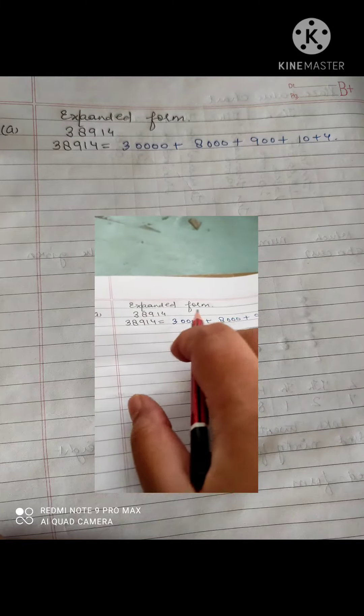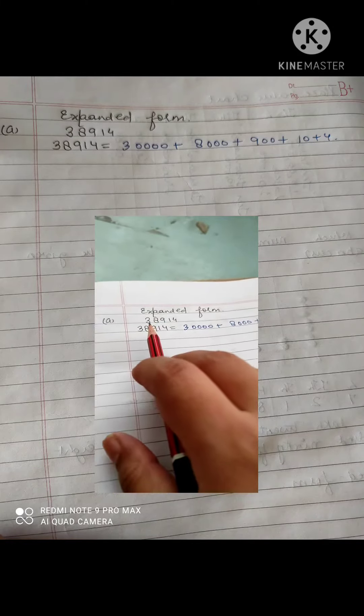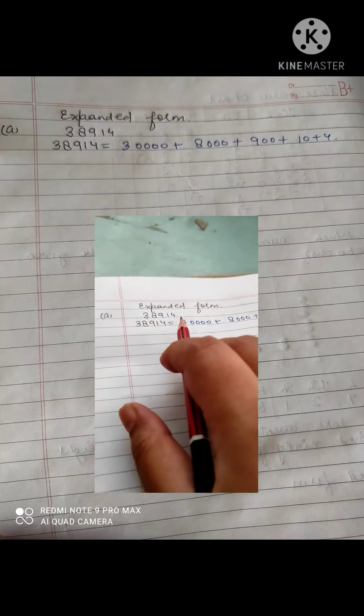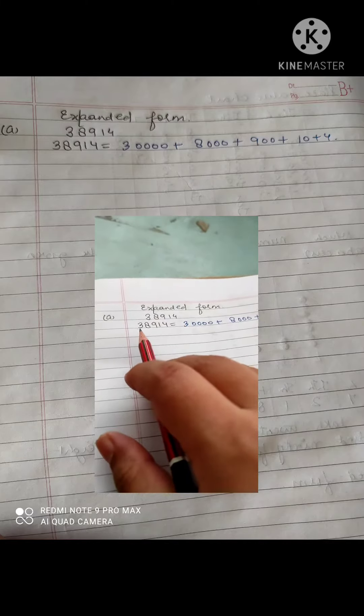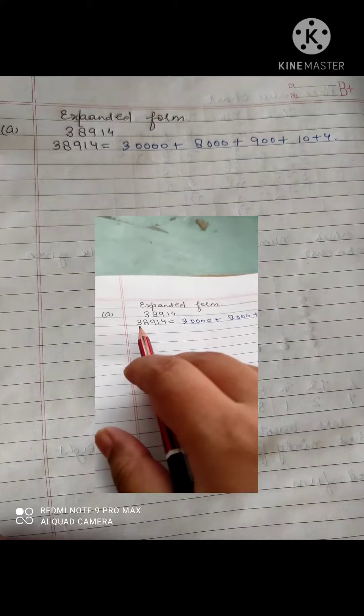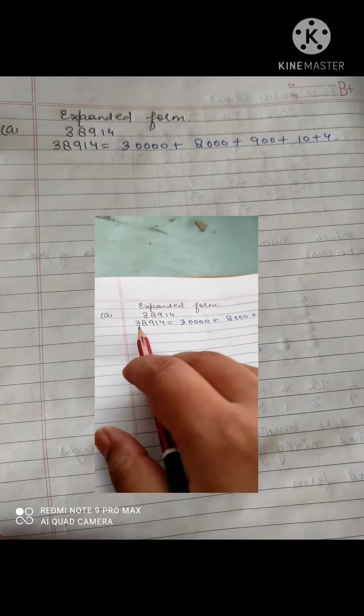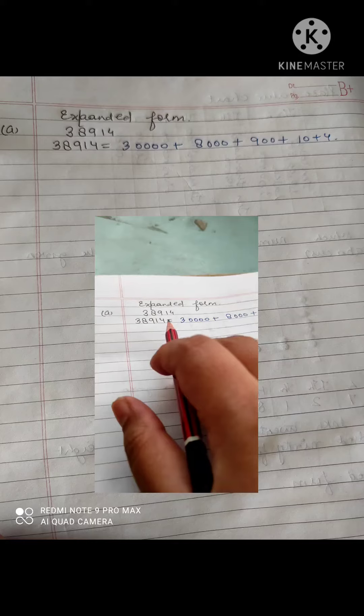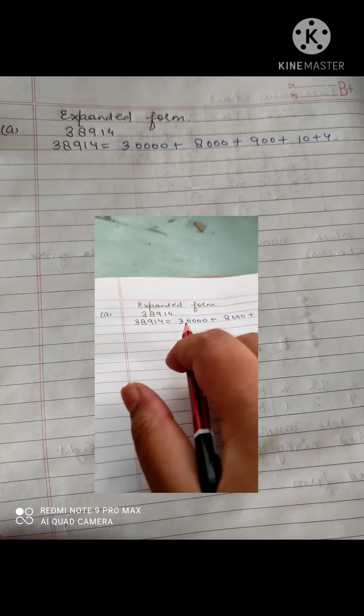Now we will read the expanded form. In the given example 38914 is given. As we all know we will start from the left. We will read it as 38914. Now how we will write the expanded form.